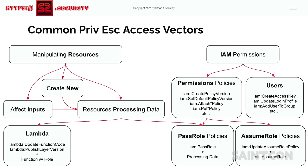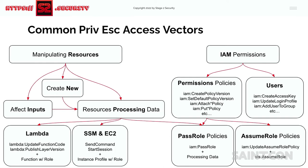Specific examples: if they have Lambda scripts — which are really common — and you can update the Lambda script, and the role associated with it has higher privileges than your user, that's a privesc path. Same with EC2 and SSM: if you can start an SSM session inside an EC2 instance that has a role with higher privileges than yourself, that's a privesc path. Generally, just go through AWS services looking for anything that has a higher-level role attached to it than yourself.